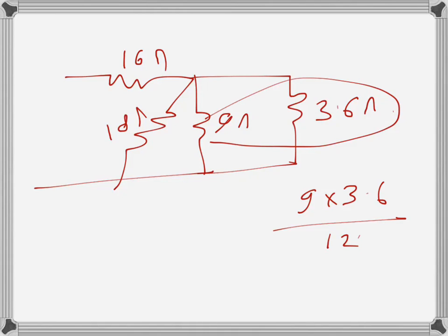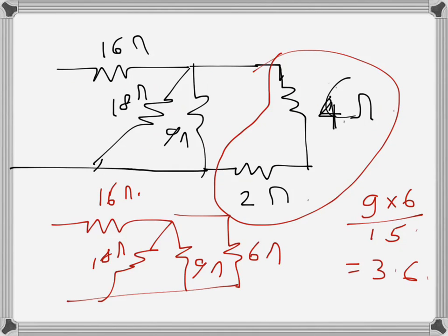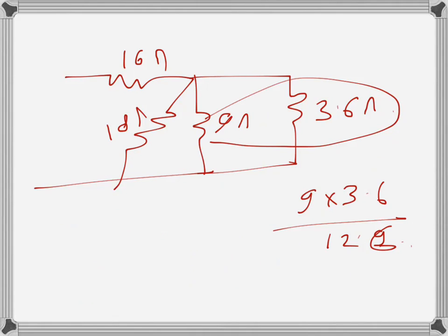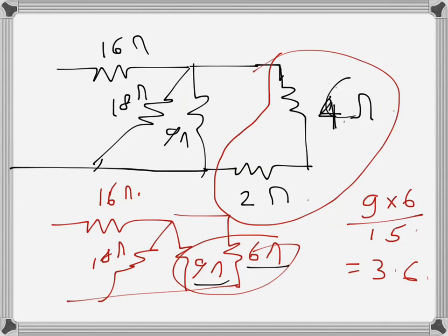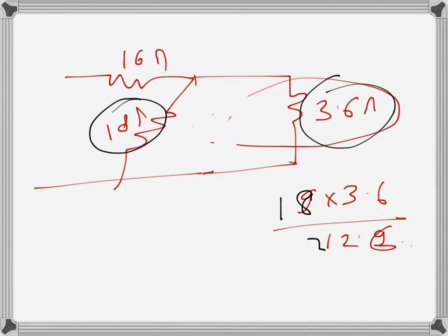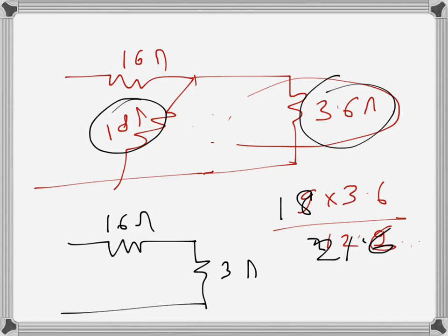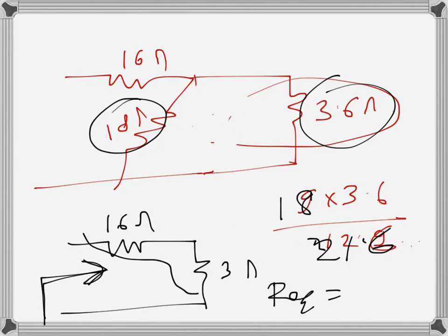Actually there's a mistake — the 9Ω is gone now. So 3.6Ω is in parallel with 18Ω. Looking at those two: 18 and 3.6 in parallel gives 18 times 3.6 over 21.6, which equals 3Ω. So we now have just 16Ω and 3Ω, and these two are in series. The final equivalent resistance is 16 plus 3 equals 19Ω.